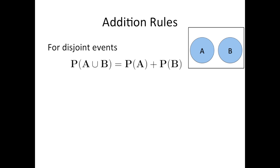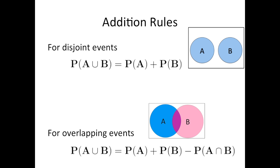To summarize the addition rules: for disjoint events — events that have no overlap — the probability of A or B equals the probability of A plus the probability of B. When we have overlapping events, the probability of A or B equals the probability of A plus the probability of B minus the probability of A and B.